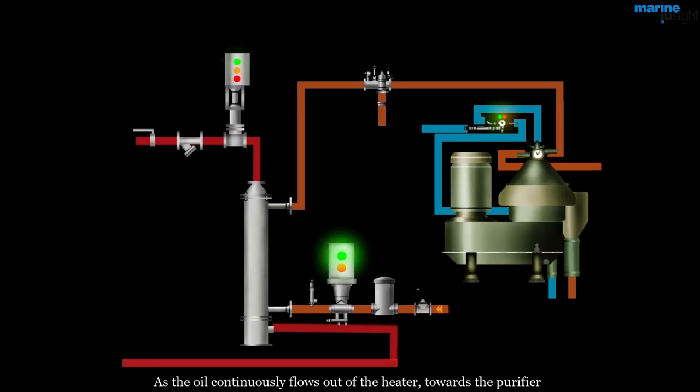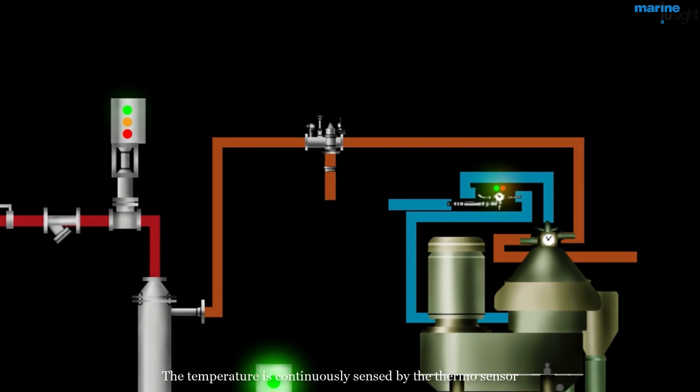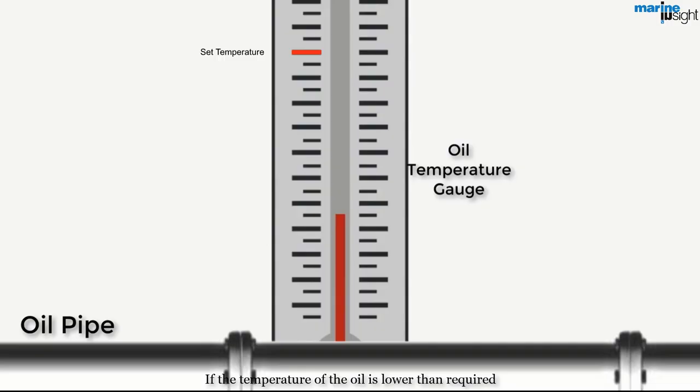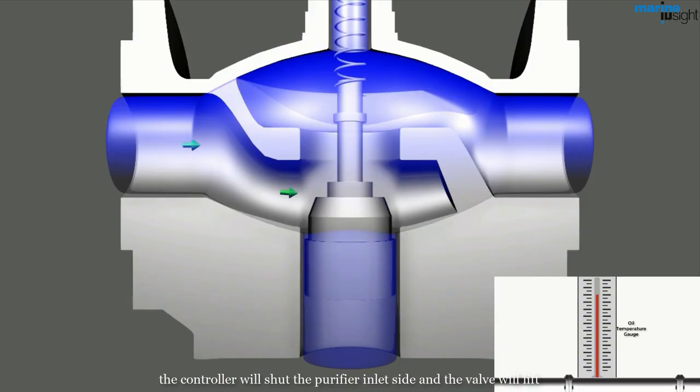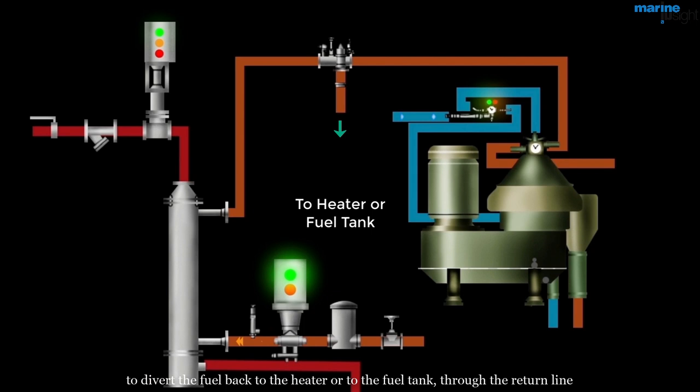As the oil continuously flows out of the heater towards the purifier, it is passed through a 3-way direction control valve, in which temperature and pressure of the oil is monitored. The temperature is continuously sensed by the thermosensor fitted on top of the 3-way valve. The output from the sensor is sent to the main control unit, which will operate the 3-way control valve. The valve can be either pneumatically or electrically operated. If the temperature of the oil is lower than required, the controller will shut the purifier inlet side, and the valve will lift to divert the fuel back to the heater or to the fuel tank through the return line.